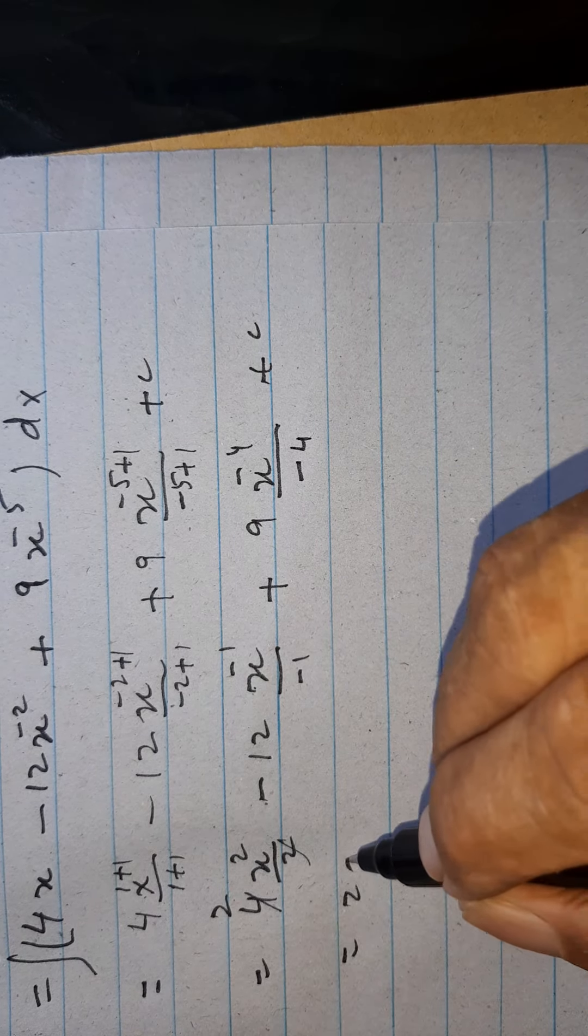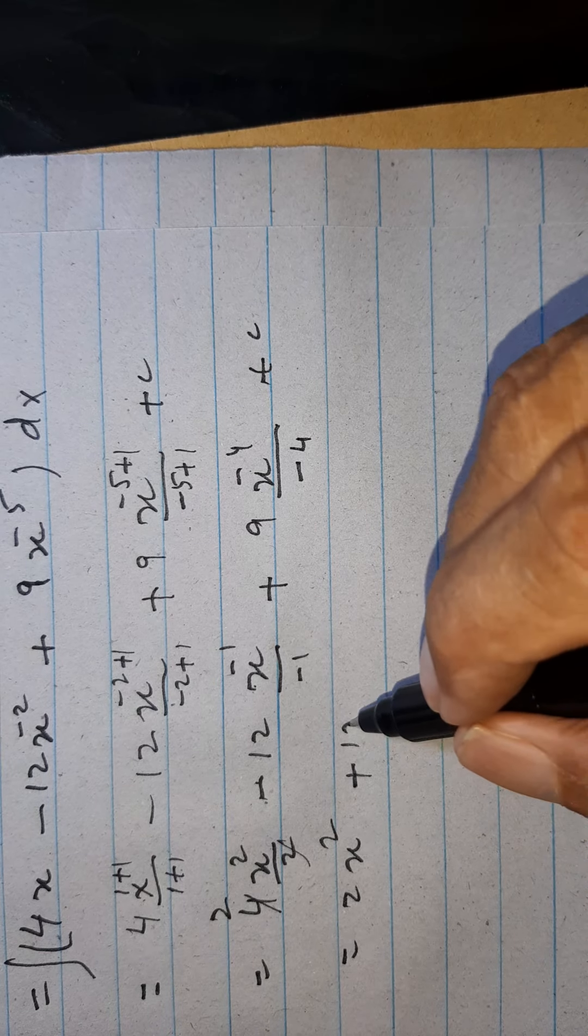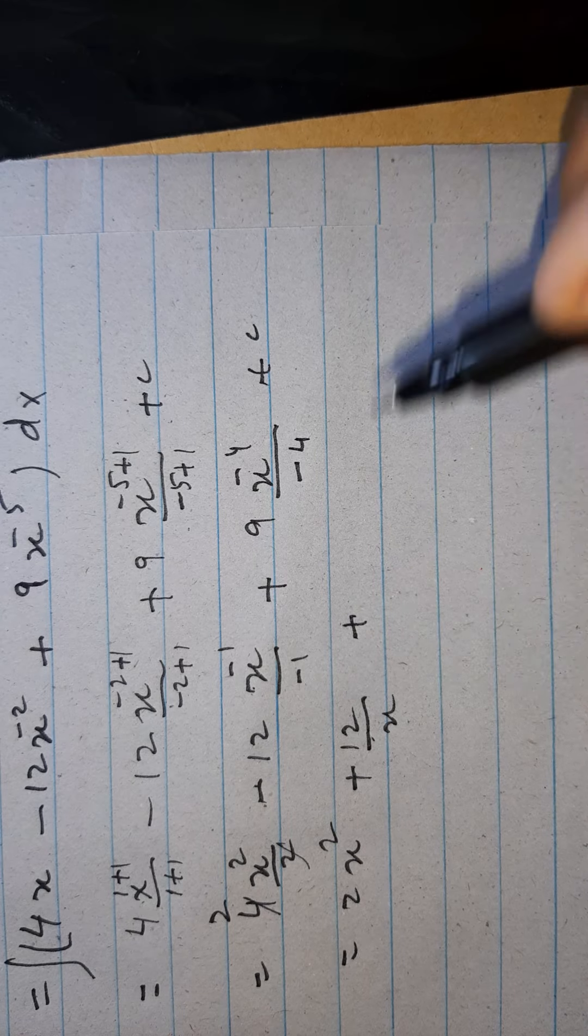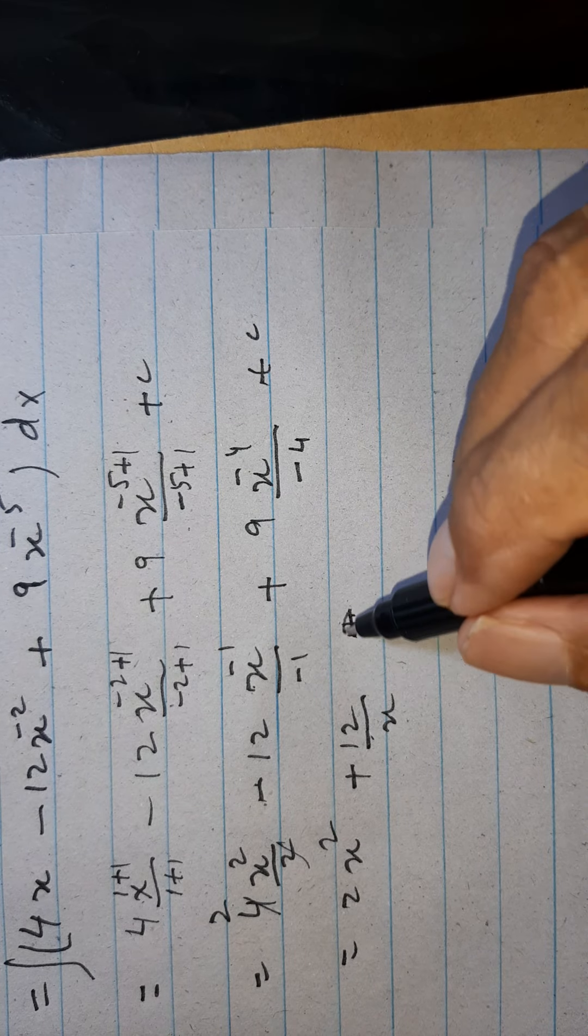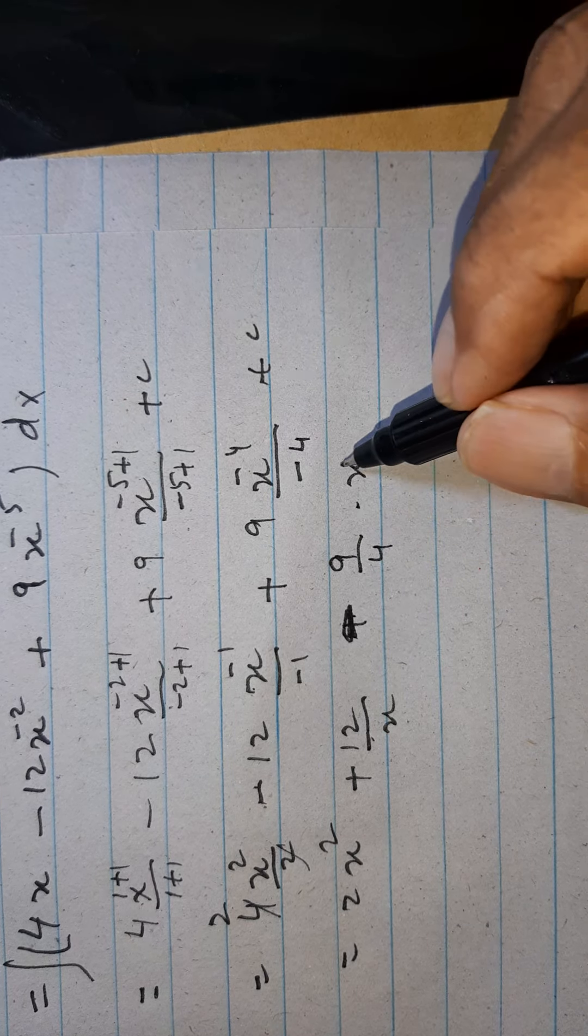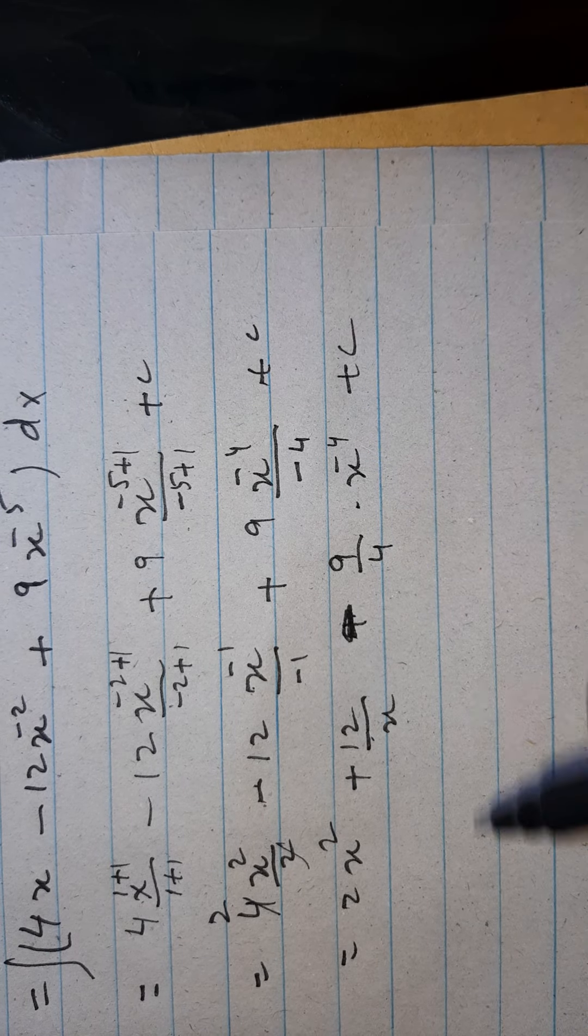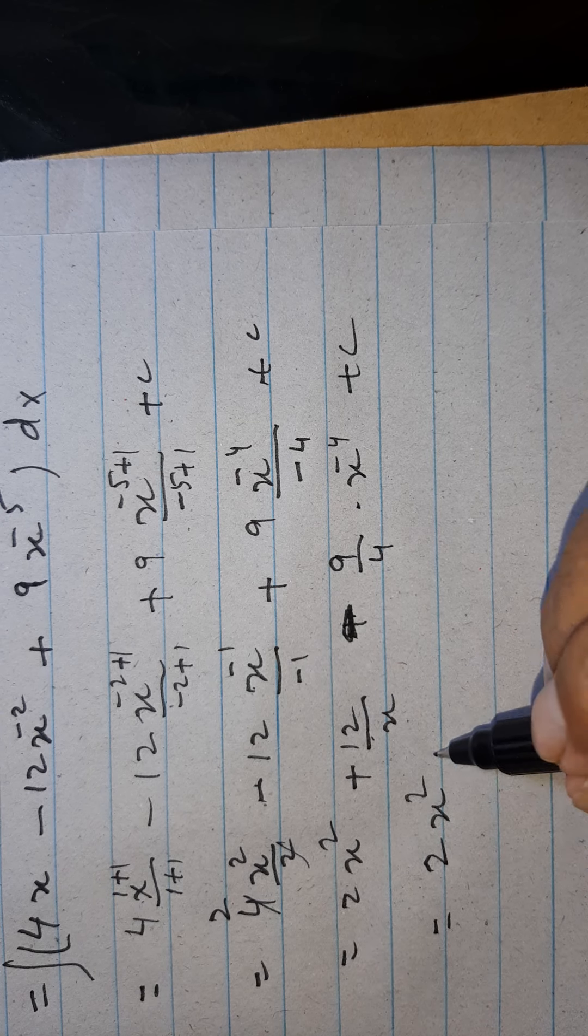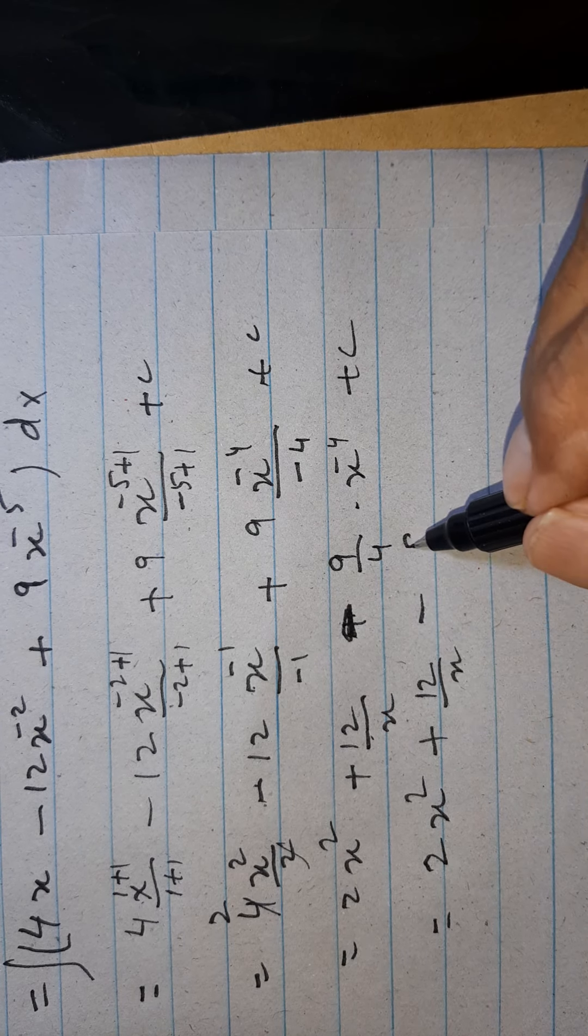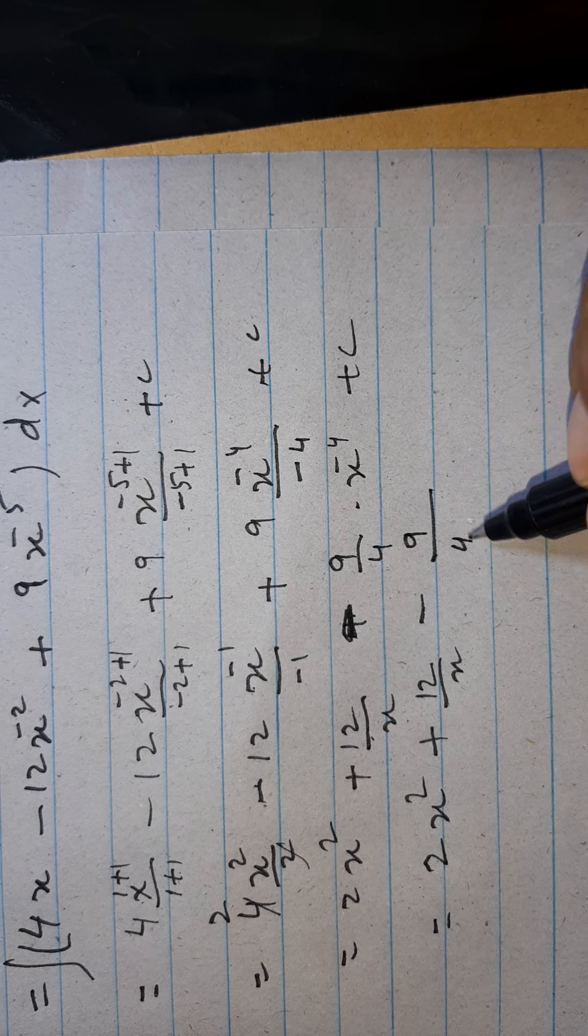is now 2 x square. This minus will be plus 12 over x, plus minus minus 9 over 4 x power minus 4 plus c. Or this is 2 x square plus 12 over x minus 9 over 4 x power 4 plus c is the answer.